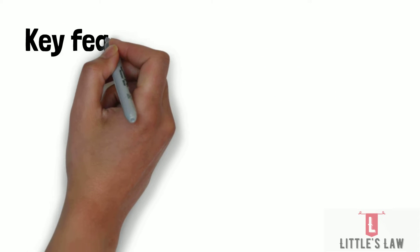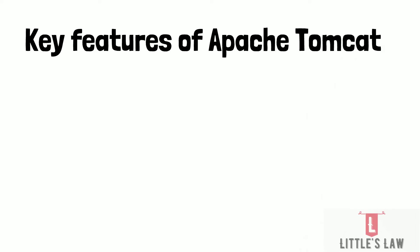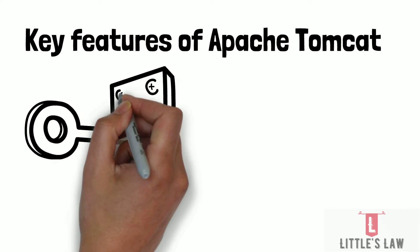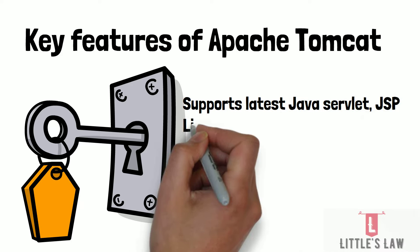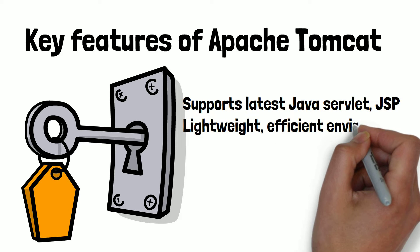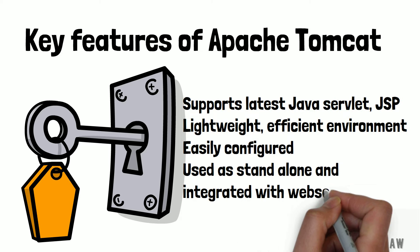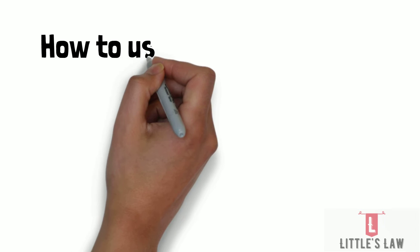So what are the key features of Apache Tomcat? Apache Tomcat supports the latest Java Servlet, Java Server Pages (JSP), and Expression Language specifications. It provides a lightweight, efficient runtime environment for web applications. It can be easily configured and extended using a variety of plugins and modules, and it can be used as a standalone web server or integrated with other web servers such as the Apache HTTP Server or Microsoft IIS.